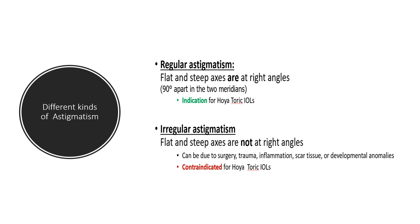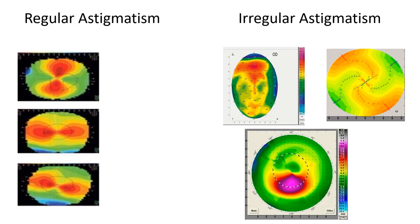On topography, regular astigmatism appears like a bow tie or butterfly wing. That bow tie can be vertically aligned — with-the-rule astigmatism — or horizontally aligned — against-the-rule astigmatism — or oblique. In irregular astigmatism there is no definite steep or flat meridian axis visible on the topography.